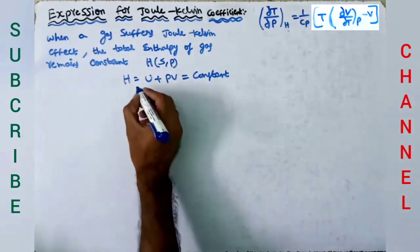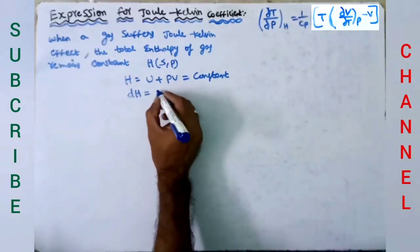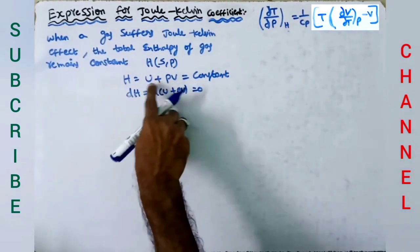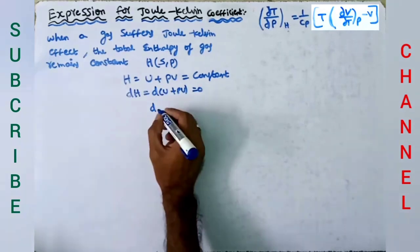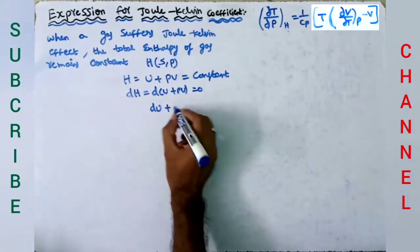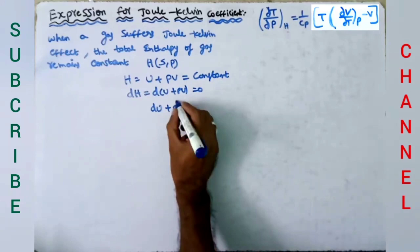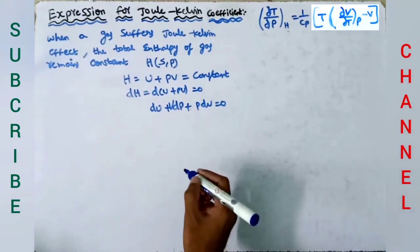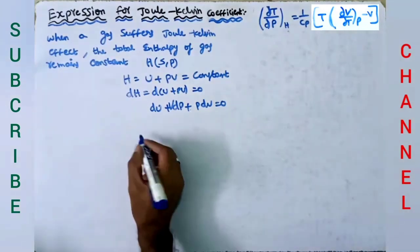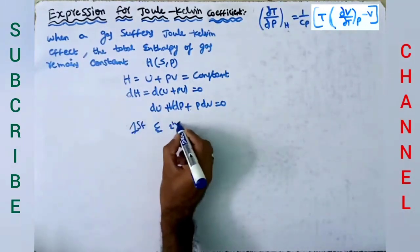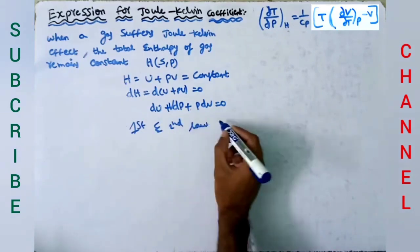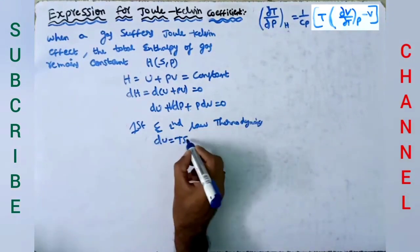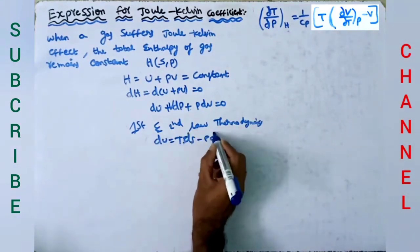This remains constant means the change in enthalpy dH equals zero, since differentiation of a constant becomes zero. From the equation joining the first and second law of thermodynamics, du equals TdS minus PdV.